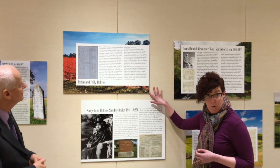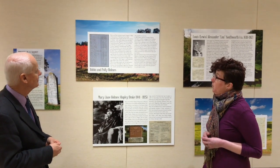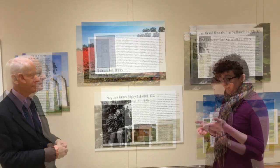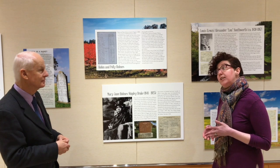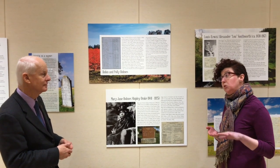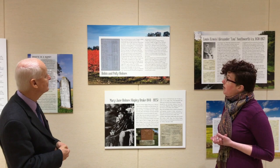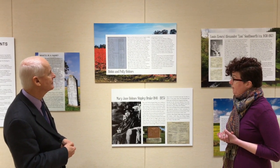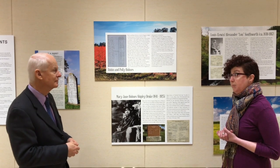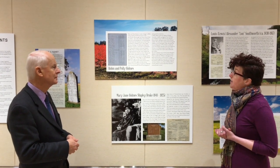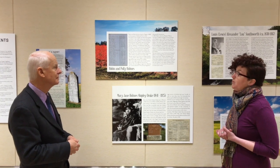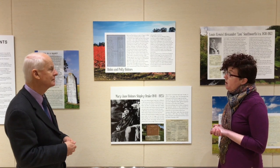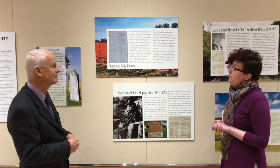Robin and Polly Holmes came to Oregon in 1844. They were property of Nathaniel Ford, who was a rather prominent person in the legislature. When they came, they had three kids — they had originally had six, but three were sold and left in Missouri. According to Holmes in the lawsuit, Ford promised them that if they helped settle the land and establish him in Oregon, they were free to go, and that didn't happen.